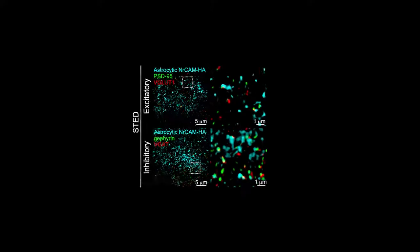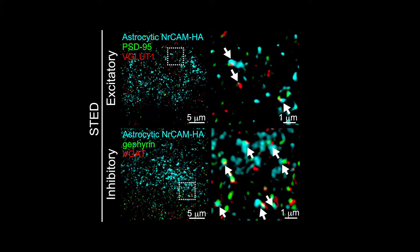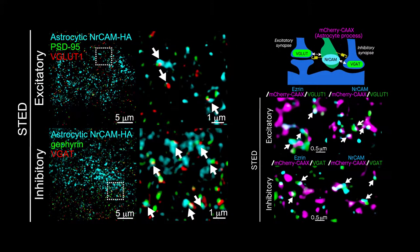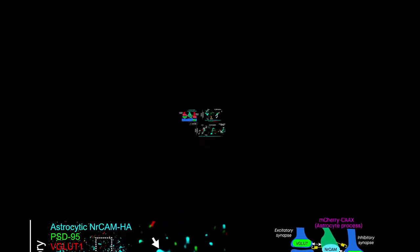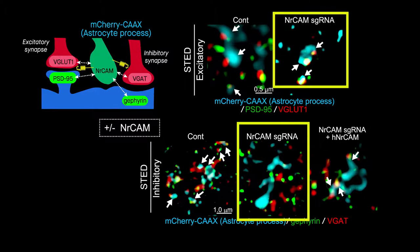Experiments showed that NR-CAM is expressed in cortical astrocytes, clusters in and around synapses, and is required to restrict infiltration by astrocytic processes.